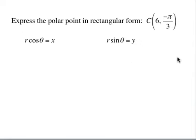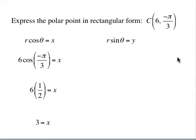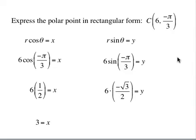Next: point C has r=6 and θ=-π/3. That will put us in the fourth quadrant — we're measuring in the negative direction, clockwise from zero. x = 6·cos(-π/3): cosine is positive in quadrant 4, cos(π/3) = 1/2, so x = 3. y = 6·sin(-π/3): sine is negative in quadrant 4, sin(π/3) = √3/2, so y = 6·(-√3/2) = -3√3. That's our fourth quadrant polar point.